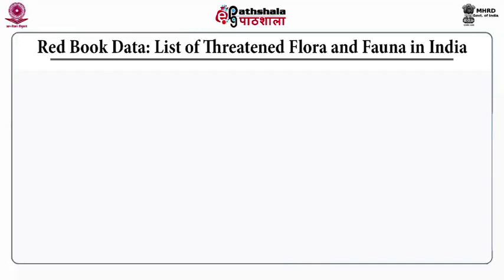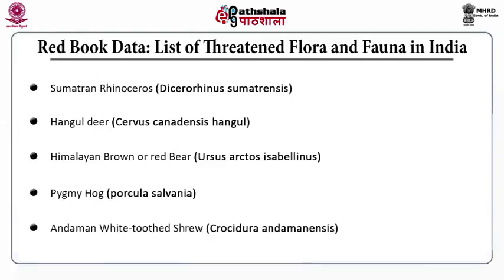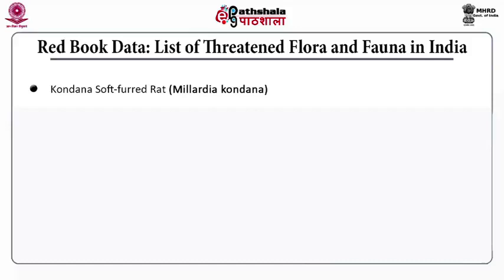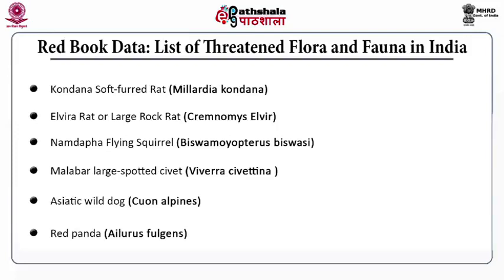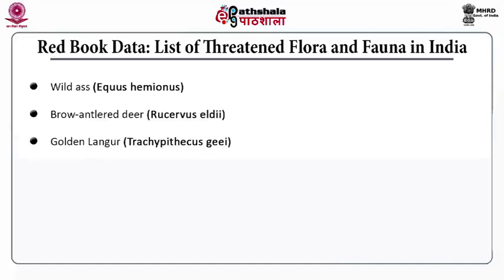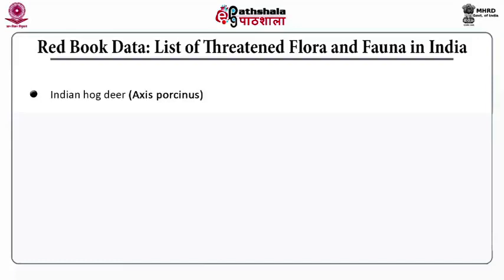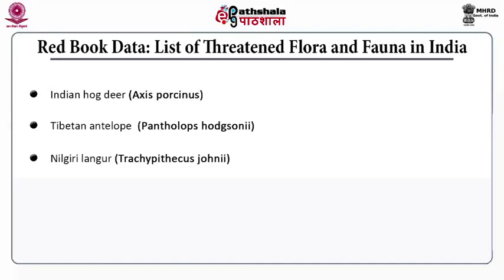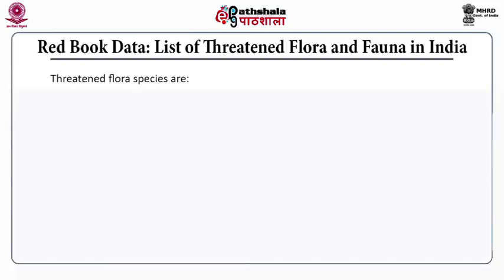The Red Data Book list of threatened fauna in India includes: Sumatran rhinoceros, hungled deer, Himalayan brown or red bear, pygmy hog, Andaman white tooth shrew, Condena soft-furred rat, Elvira rat, large rock rat, Namdaifa flying squirrel, Malabar large spotted civet, Asiatic wild dog, red panda, wild ass, brown antler deer, golden langur, white-bellied musk deer, Indian hawk deer, hispid hare, Assam rabbit, lion-tailed macaque, Tibetan antelope, Nilgiri langur, Nilgiri tahr, and Ganges river dolphin, also known as Platanista gangetica.